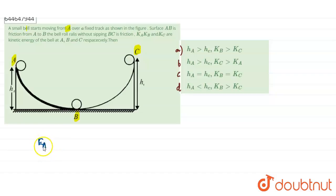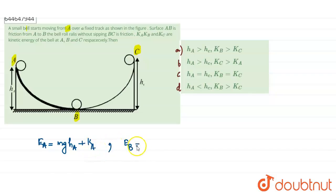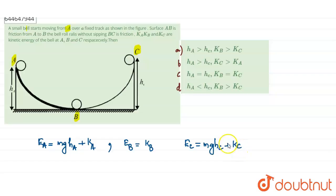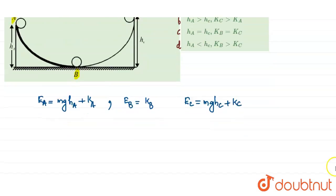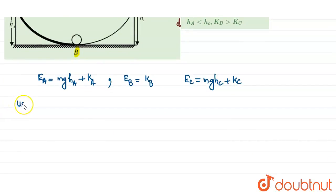At position A, the ball has both potential energy and kinetic energy, so the total energy is mgh_A plus KA. At position B, there is only kinetic energy, KB. At position C, there is potential energy and kinetic energy, so the total is mgh_C plus KC. We now apply conservation of energy.